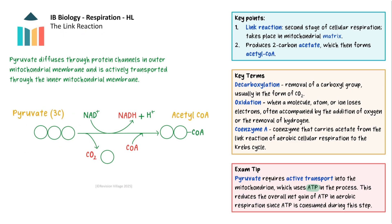During the link reaction, the 3-carbon pyruvate is decarboxylated — in other words carbon dioxide is removed — and it is also oxidised, where electrons are lost and hydrogens are removed. This forms a 2-carbon acetyl group which is then attached to coenzyme A, forming acetyl-CoA. Acetyl-CoA is then transported to the Krebs cycle. It is also important to note that lipids and other carbohydrates can both supply these acetyl groups; lipids are broken down into acetyl-CoA which enters the same pathway as carbohydrates.